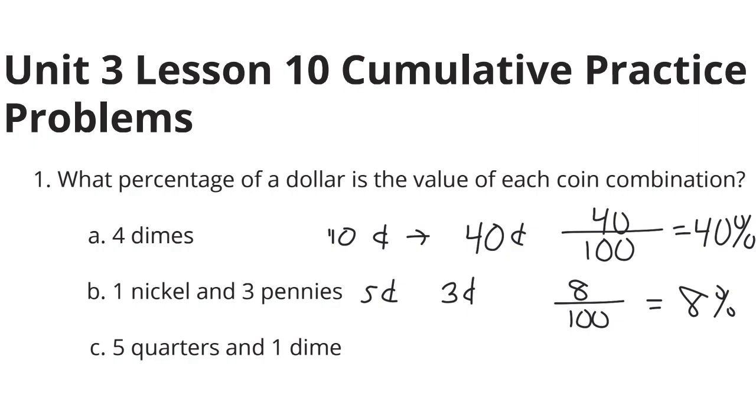Next, we have five quarters and one dime. Well, a quarter is worth 25 cents, and five of those, if we multiply by five, would be 125 cents. The one dime is 10 cents. And so add those together, and we get 135. The key is, it's still over a dollar, which is 100 cents, and so this would be 135%.